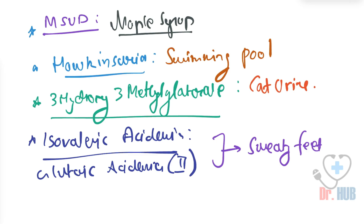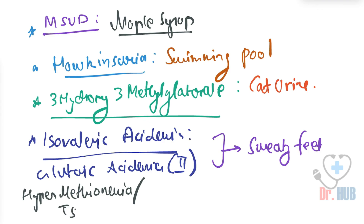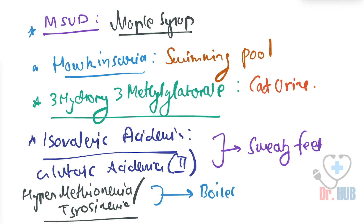Next we look at hypermethionemia as well as tyrosinemia. Both of these conditions give a boiled cabbage odor.